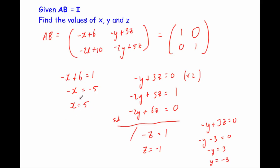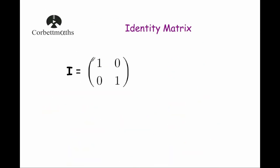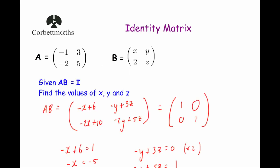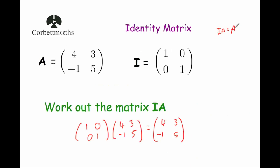So our final answers are x equals 5, y equals minus 3, and z equals minus 1. To recap: the 2 by 2 identity matrix is [[1, 0], [0, 1]], denoted I. You might need to know that if you multiply a matrix A by the identity matrix I — whether you do A times I or I times A — you'll always get A back. That's the key property of the identity matrix.